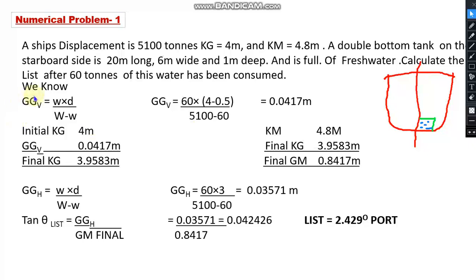We need to divide the answer into two parts: movement of mass in the vertical plane and movement of mass in the horizontal plane. First, if I take the formula for movement of mass in the vertical plane, the shifting in center of gravity GGv can be found out by w×d/(W-w), where small w is the mass which has moved, capital W is the displacement mass of the vessel.